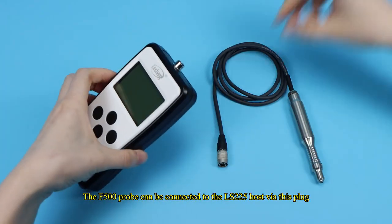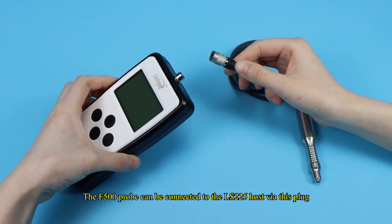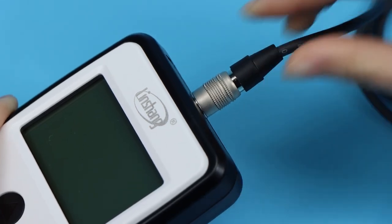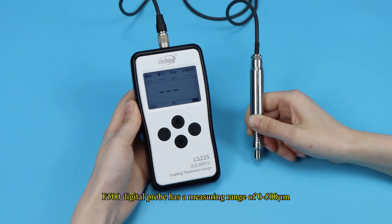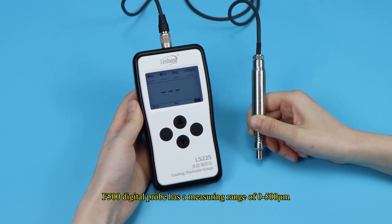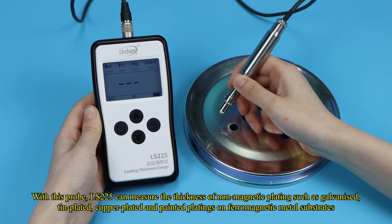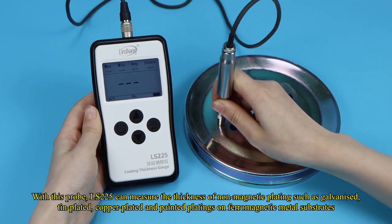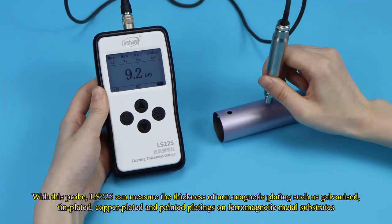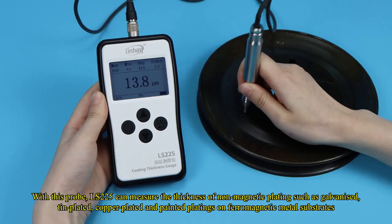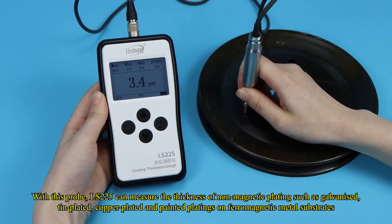The F-500 probe can be connected to the LS-225 host via this plug. F-500 digital probe has a measuring range of 0 to 500 micrometer. With this probe, LS-225 can measure the thickness of non-magnetic platings such as galvanized, tin-plated, copper-plated and painted platings on ferromagnetic metal substrates.